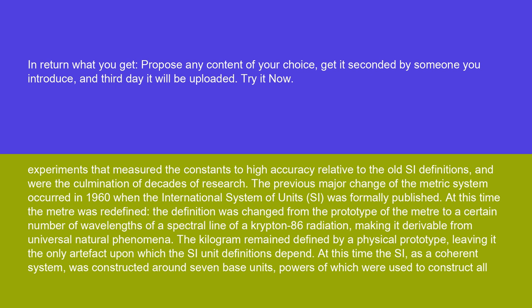The previous major change of the metric system occurred in 1960 when the International System of Units (SI) was formally published. At this time, the meter was redefined from the prototype of the meter to a certain number of wavelengths of a spectral line of krypton-86 radiation, making it derivable from universal natural phenomena. The kilogram remained defined by a physical prototype, leaving it the only artifact upon which the SI unit definitions depend. The SI, as a coherent system, was constructed around seven base units, powers of which were used to construct all other units.